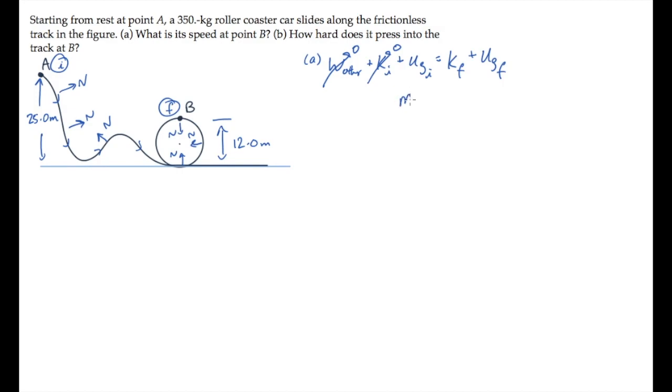The initial gravitational potential energy is mgYi. The final kinetic energy is ½mv final squared, and the final gravitational potential energy is mgYf.